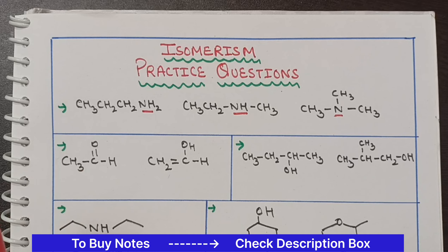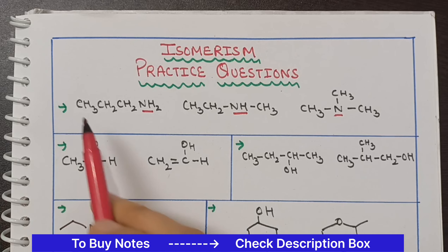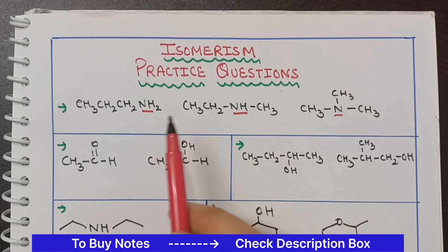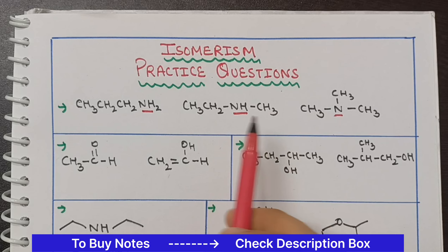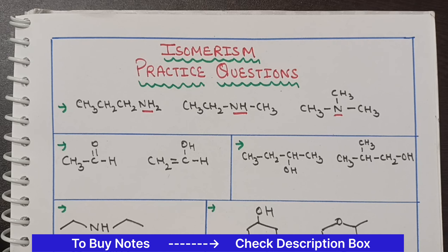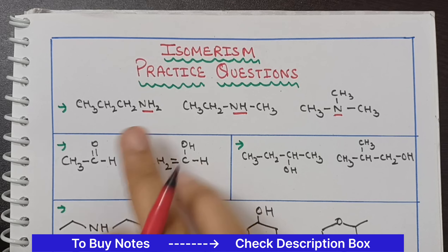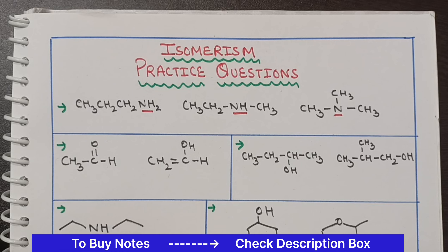If you can see their molecular formulas, there are 1, 2, 3 carbons and 1 nitrogen. So the molecular formulas are the same. But what is different? Because what is the same in isomerism? Molecular formulas are the same.